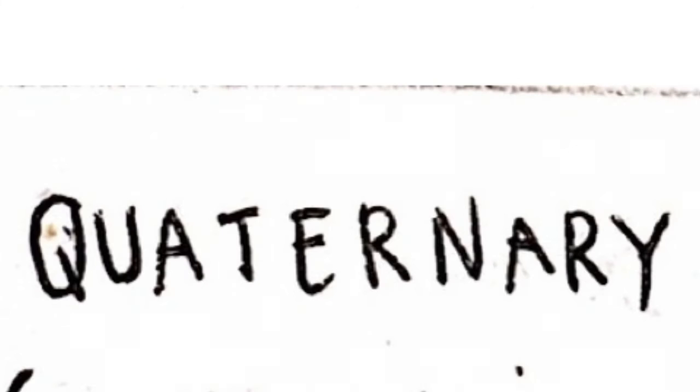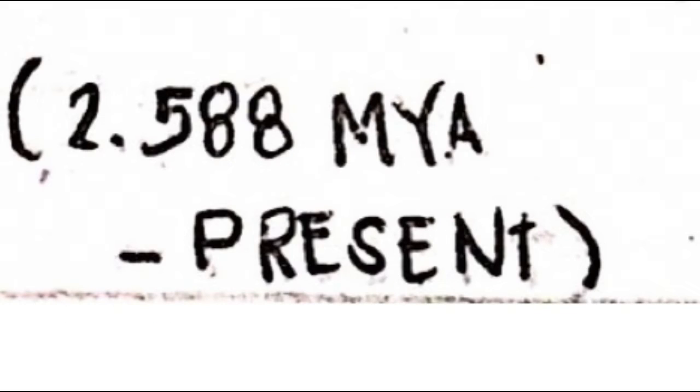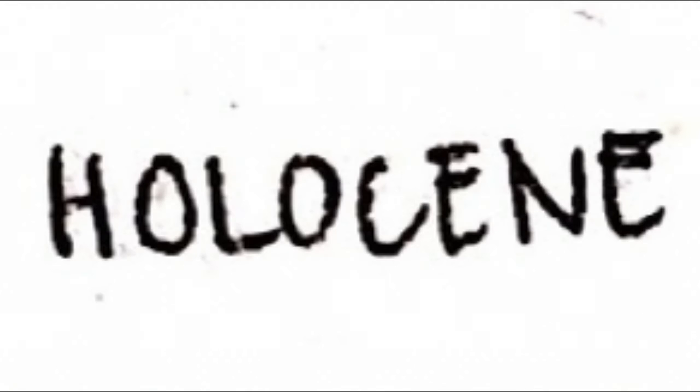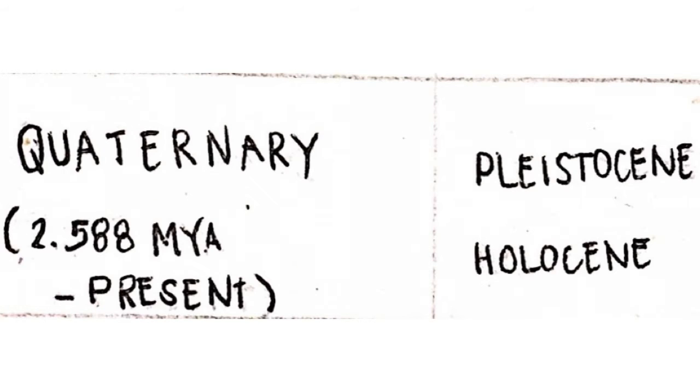The last period is the Quaternary period, which began 2.58 million years ago and is up to the present. This period is composed of the Pleistocene epoch and the Holocene epoch. Now, to proceed with the discussion.